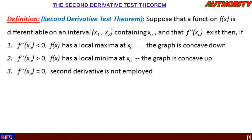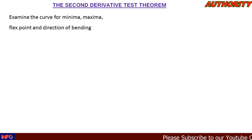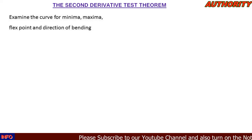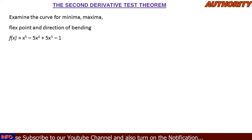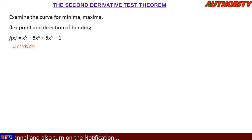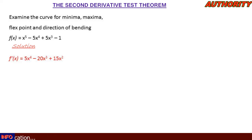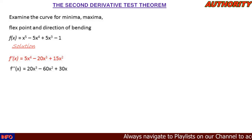Let's examine the curve for minima, maxima, flex points, and direction of bending. We have f(x) = x⁵ − 5x⁴ + 5x³ − 1. Differentiating, we get f'(x) = 5x⁴ − 20x³ + 15x². Differentiating again, we get f''(x) = 20x³ − 60x² + 30x.